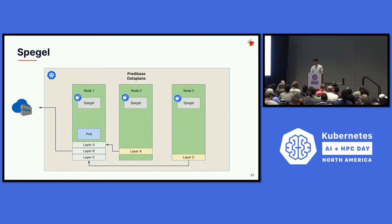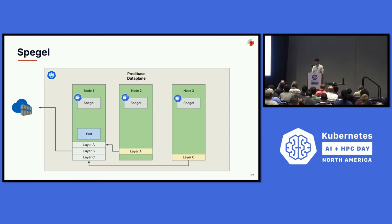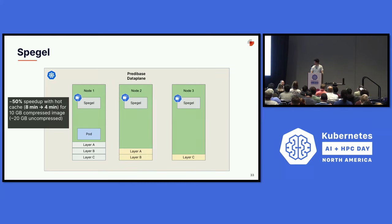If a layer is not found it will go out and download from the remote registry, but then that layer is now in the cluster so any other pod that needs it can download it from inside the cluster. This requires ContainerD as the container runtime, but most cloud providers have switched over from Docker so this hasn't been an issue for us. After adding Spegel with very minimal configuration, we saw a dramatic decrease in container download time — for our larger GPU images this went from about eight minutes down to four.